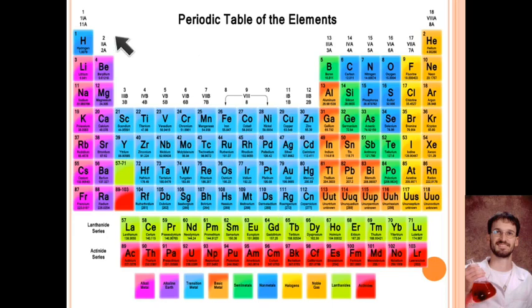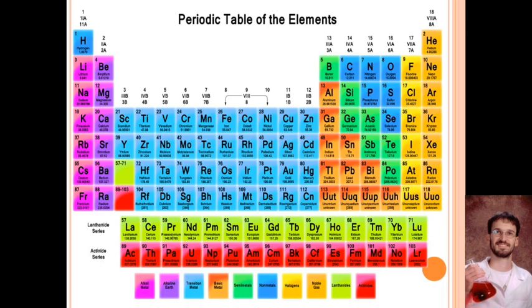Keep in mind that nature doesn't have these groups — nature just has a bunch of elements. We put things in groups to categorize them so we can discuss them more easily. There's actually a gradient of change as you go from metals to non-metals. When we categorize things, we have to draw a line somewhere, and you'll find some properties from metals over here that don't exactly match up — but they're still metals.